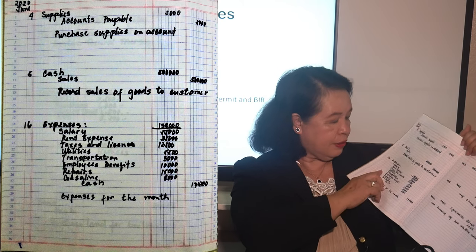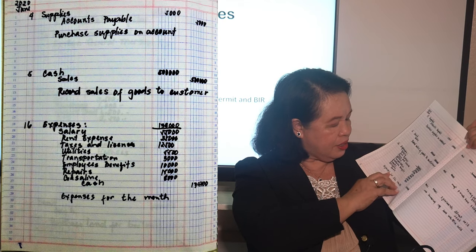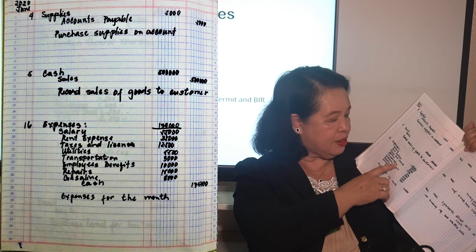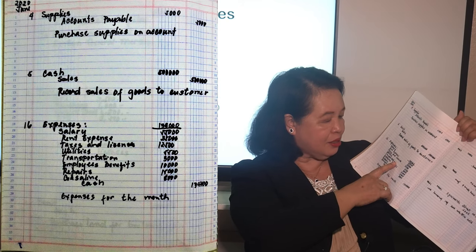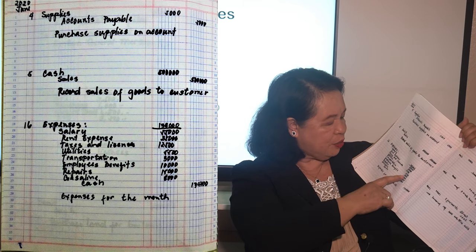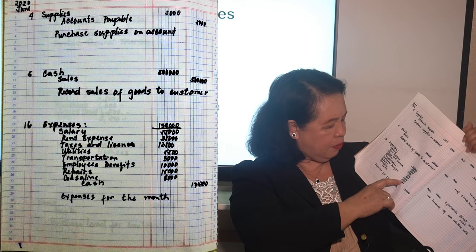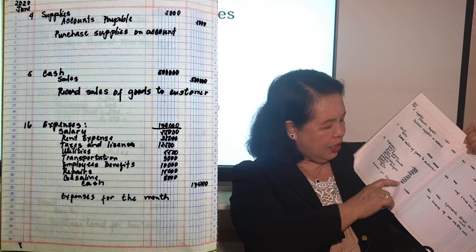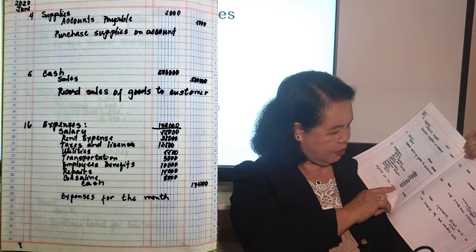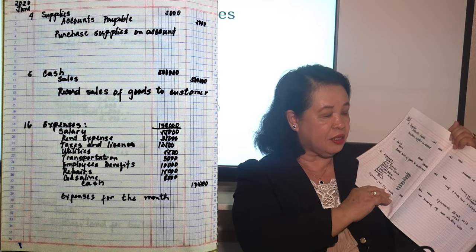On June 16, I paid my expenses totaling 134,000: salary 55,000, rent expense 55,000, taxes and licenses 12,500, utilities 5,500, transportation 3,000, employee benefits 10,000, repairs 15,000, and gasoline 8,000. I credited cash 134,000. What I recorded here are the expenses for the month. This is how your journal entries look when you have recorded your expenses.